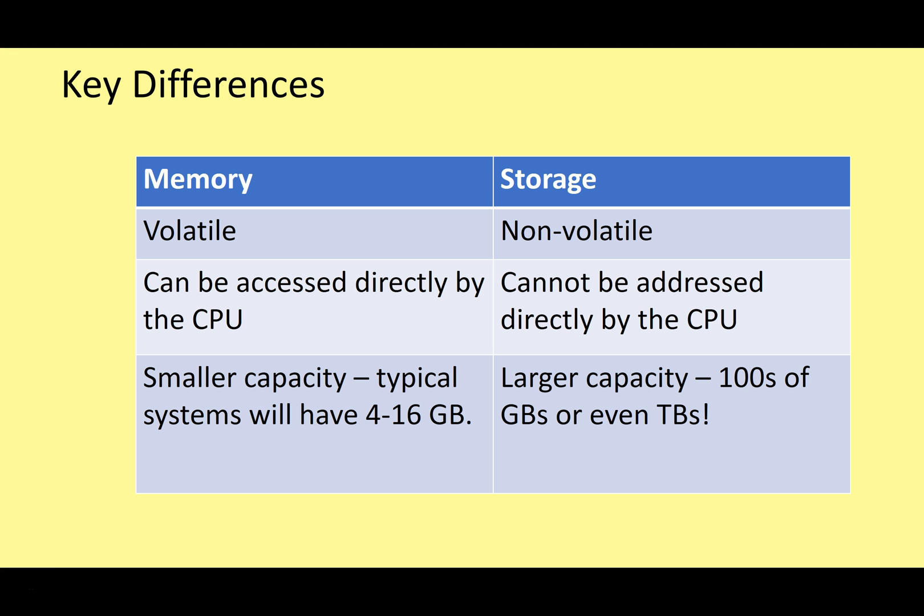Here's a table illustrating the difference between main memory and secondary storage. Main memory is volatile; secondary storage is non-volatile. Main memory can be accessed directly by the CPU; secondary storage cannot. Main memory has a smaller capacity — typical systems have 4 to 16 gigabytes, while more powerful workstations might have 32 or 64 gigabytes of RAM. That still pales in comparison with secondary storage, which offers hundreds of gigabytes and usually terabytes on modern systems.